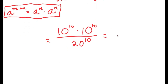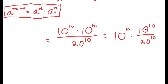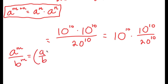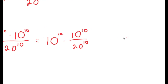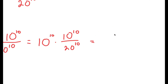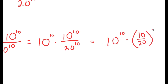This can be written as 10 to the power of 10, times 10 to the power of 10 over 20 to the power of 10. I grouped 10 to the power of 10 over 20 to the power of 10 so I can use the property a to the power of m over b to the power of m equals a over b to the power of m. This turns into 10 to the power of 10 times 10 over 20 to the power of 10, which equals 10 to the power of 10 times 1 half to the power of 10.